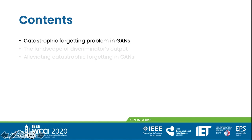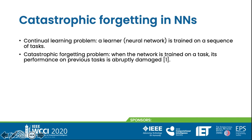Catastrophic forgetting in neural networks is a problem usually observed in a continuous learning setting, where a learner, typically a neural network, is trained on a sequence of tasks. The performance of the network on the previous tasks could be abruptly damaged by the training of the new task.